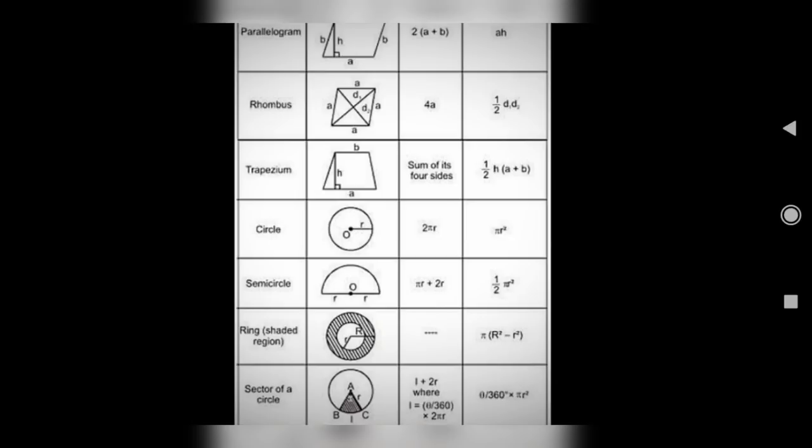Area is half into D1 into D2, where D means diagonal. Diagonal 1 into diagonal 2.